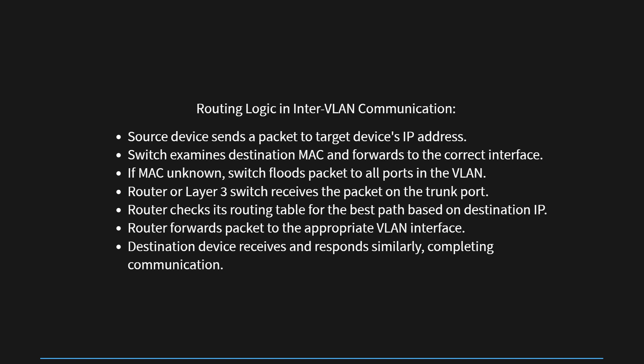Step 2: The switch receives the packet and examines the destination MAC address to determine the appropriate outgoing interface. Step 3: If the destination MAC address is not found in the switch's MAC address table, the switch broadcasts the packet to all ports in the destination VLAN's broadcast domain. Step 4: The router or Layer 3 switch acting as the default gateway for both VLANs receives the broadcasted packet on its trunk port. Step 5: The router examines the destination IP address and checks its routing table to determine the best path. Step 6: Based on the destination VLAN's IP address, the router forwards the packet to the corresponding VLAN interface — logical sub-interface, SVI, or routed port.